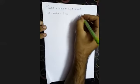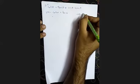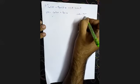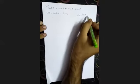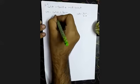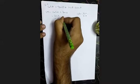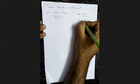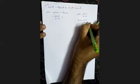Now, cot theta — what is cot theta? Cot theta can be written as cos theta by sin theta. So we can write it as cos theta by sin theta plus tan theta. What is tan theta? Tan theta is sin theta by cos theta.